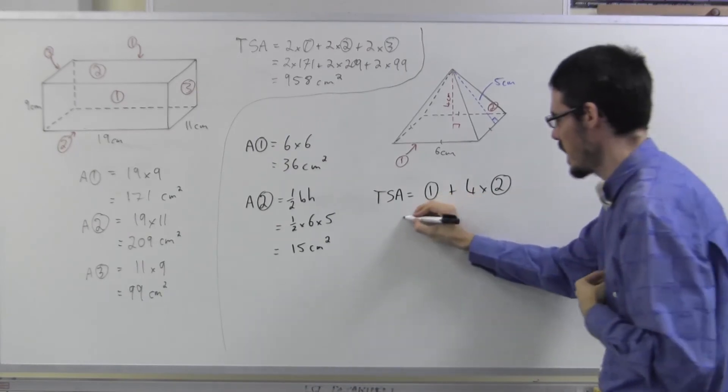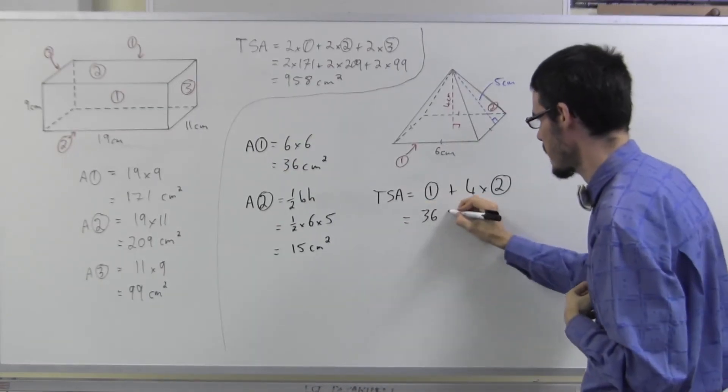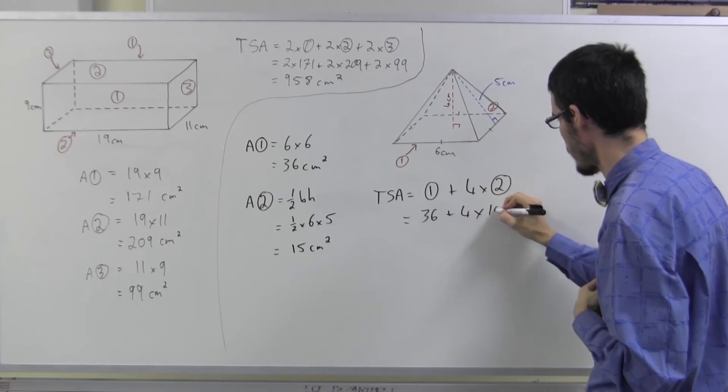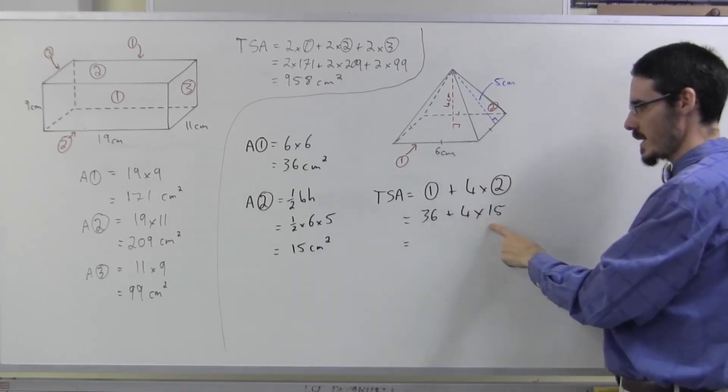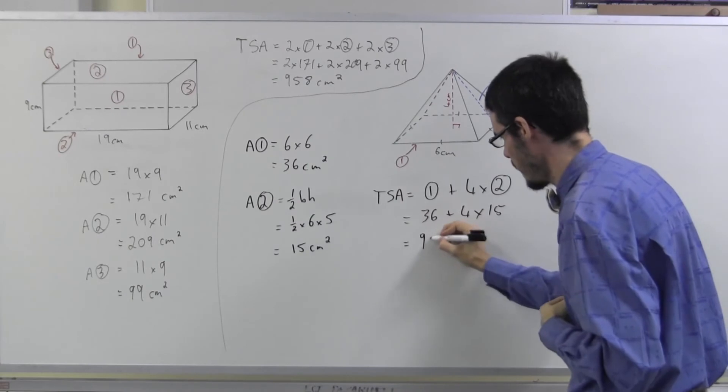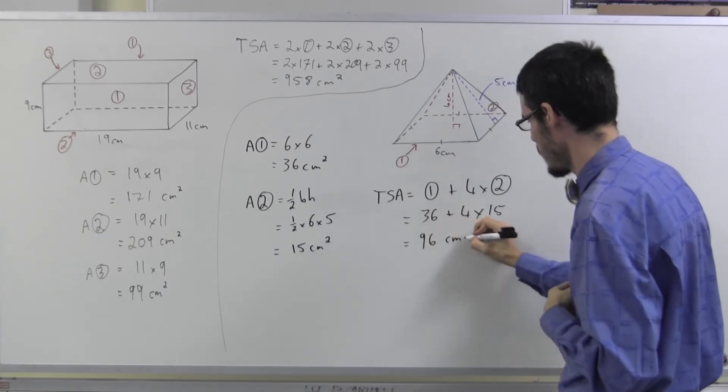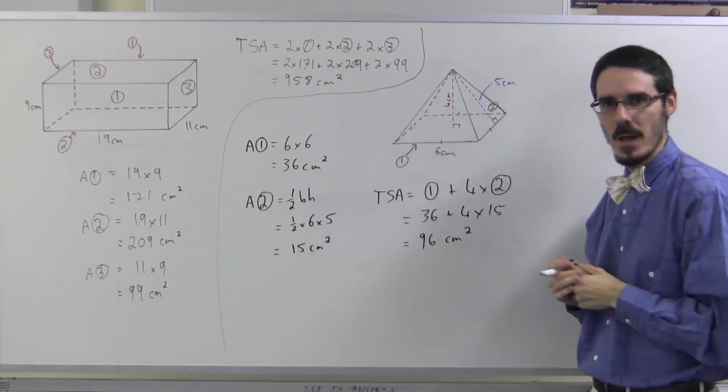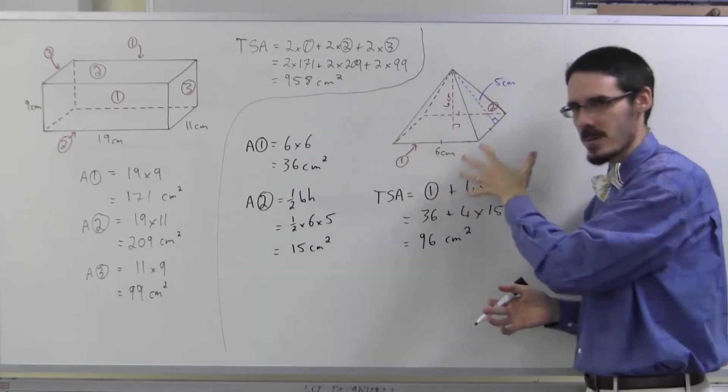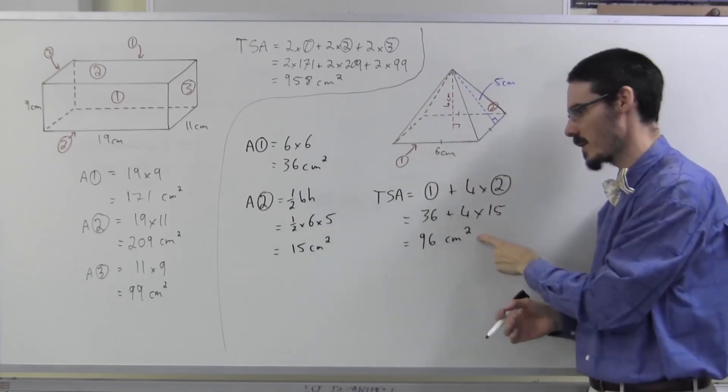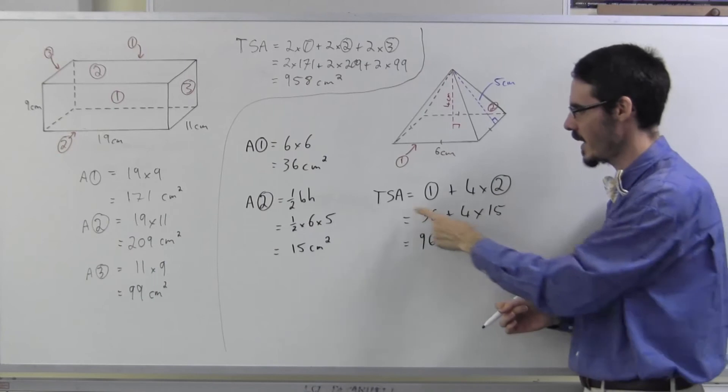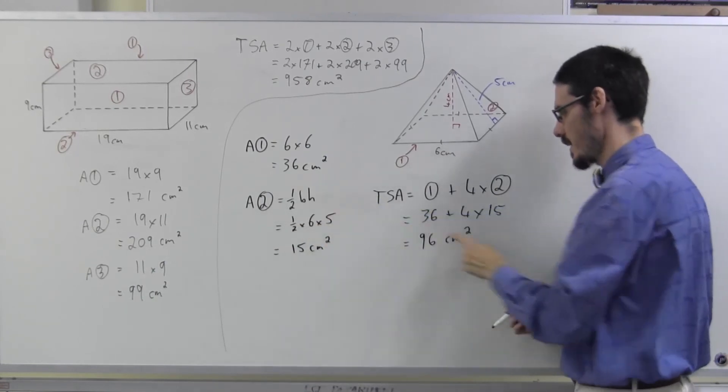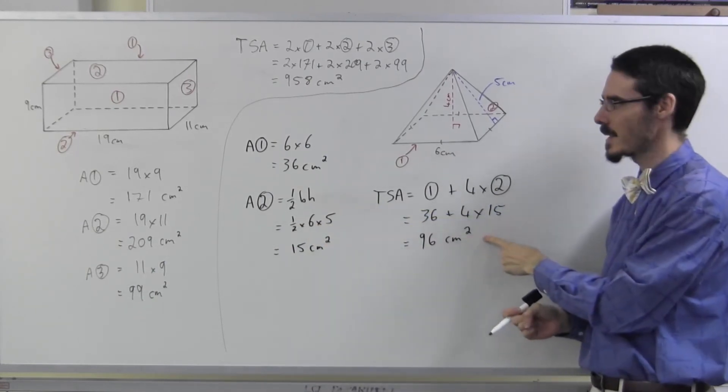And now the total surface area is one of those on the bottom plus four of the triangles on the sides. So I have 36 plus four lots of 15. Well, four 15s is 60, 96 square centimeters. Notice that even though it's a three-dimensional shape, I've still only got square centimeters. I'm finding areas by multiplying two lengths. So I'm still going to have square centimeters.